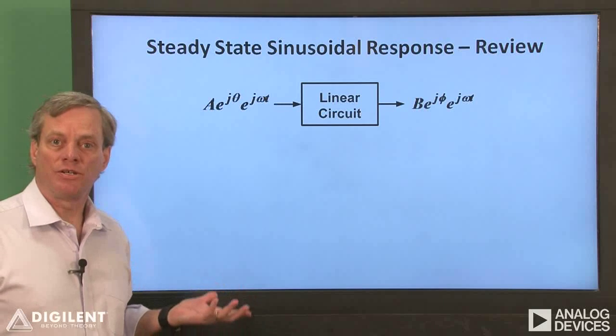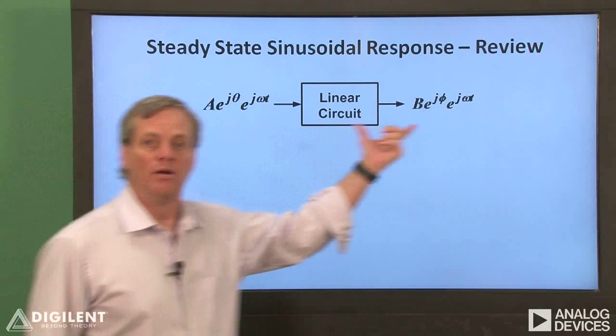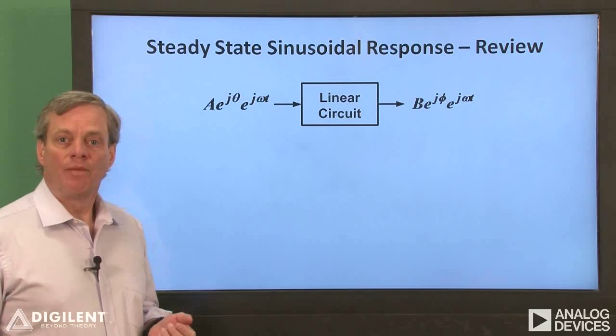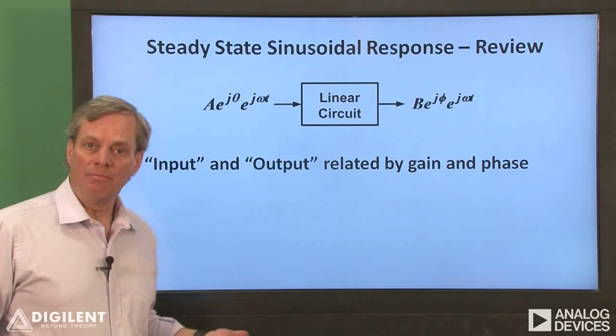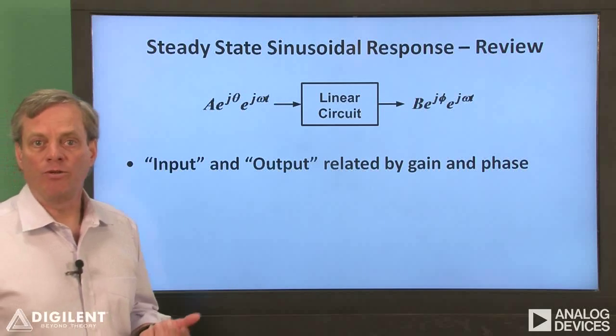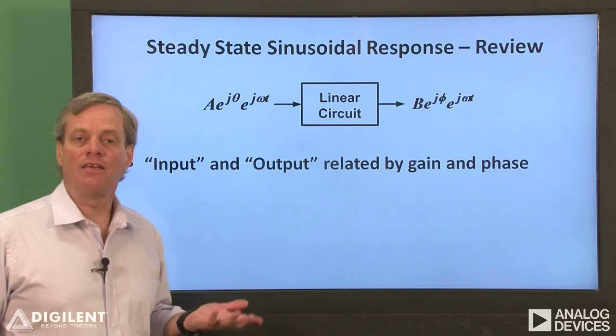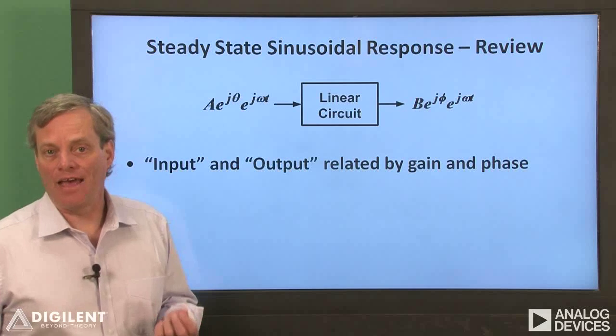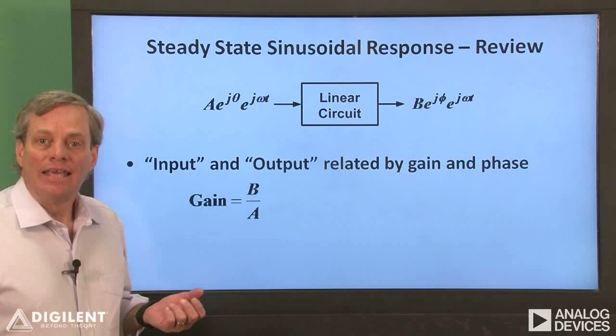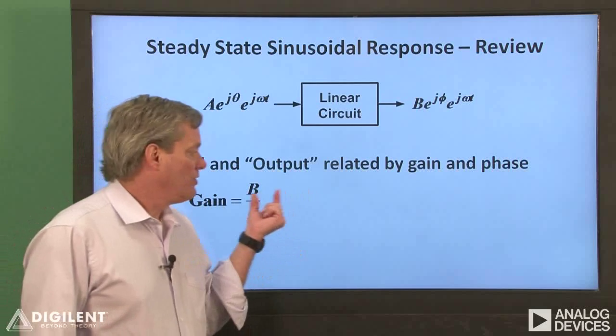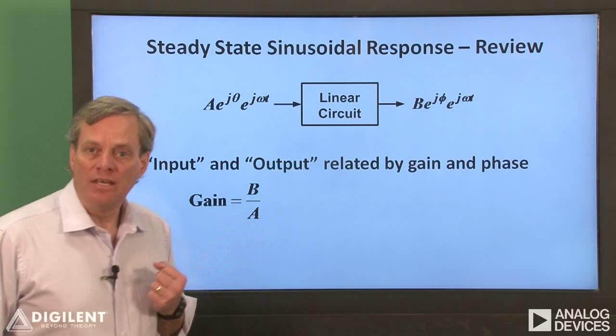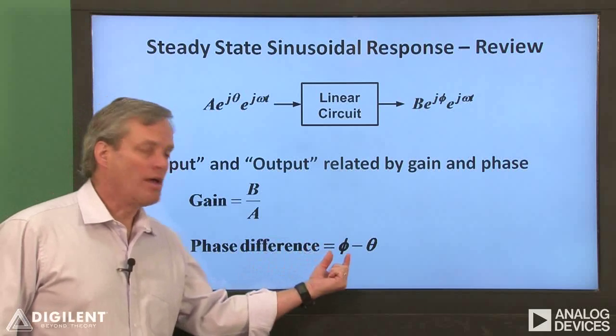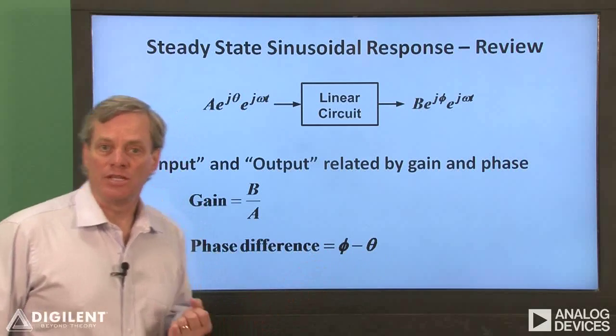We've also seen that the relationship between our input and our output at some frequency can be expressed as a gain and a phase difference. These parameters can be used to characterize the behavior of the circuit at that frequency. Gain is defined as the ratio of the magnitude of the output sinusoid to the magnitude of the input sinusoid, while the phase difference is defined as the phase of the output sinusoid minus the phase of the input sinusoid.